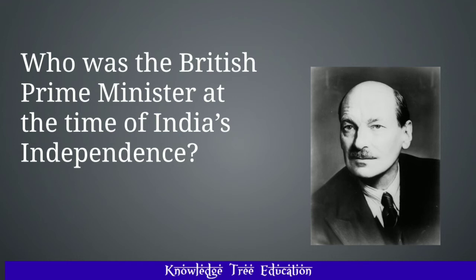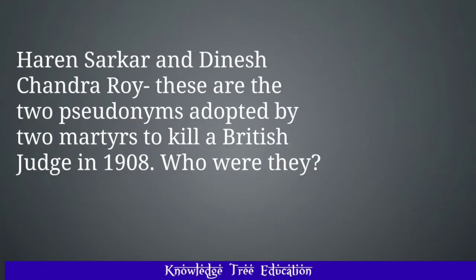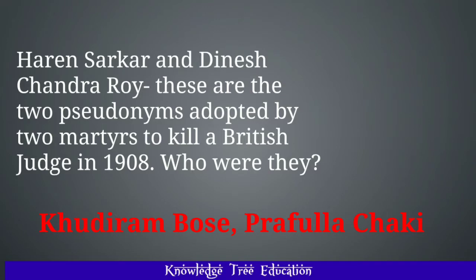Who was the British Prime Minister at the time of India's independence? The answer is Clement Attlee. Haran Sarkar and Dinesh Chandra Roy are the two pseudonyms adopted by two martyrs to kill a British judge in 1908. Who were they? And the answer is Khudiram Bose and Prafulla Chaki.